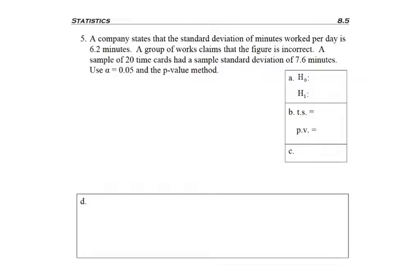A sample of 20 time cards has a sample standard deviation of 7.6 minutes. Use alpha equals 0.05 and the p-value method.